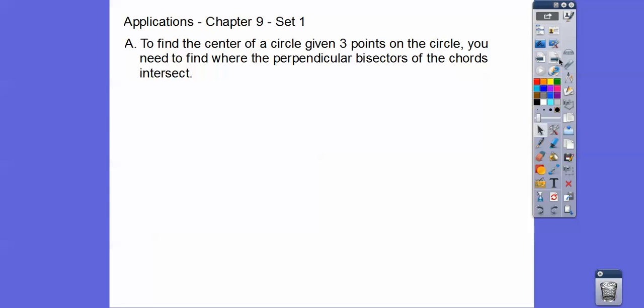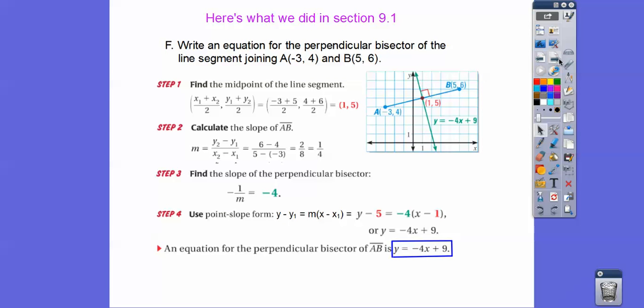So to find the center of a circle, given three points on a circle, you need to find where the perpendicular bisectors of the chords intersect. So we did this in section 9.1. So here we had the perpendicular bisectors.